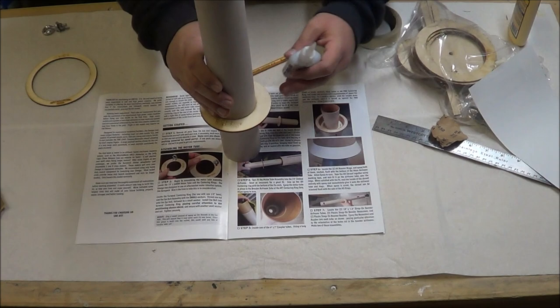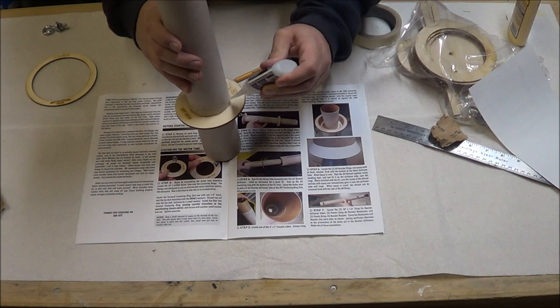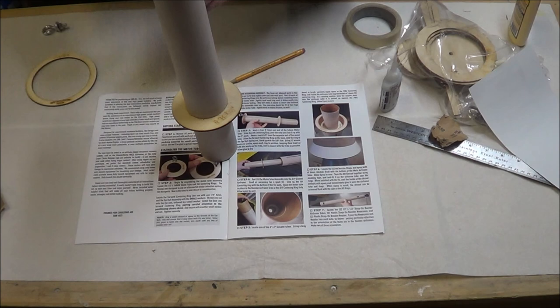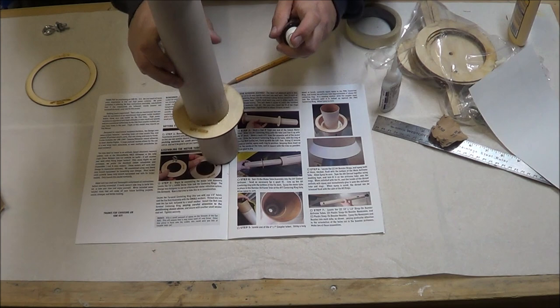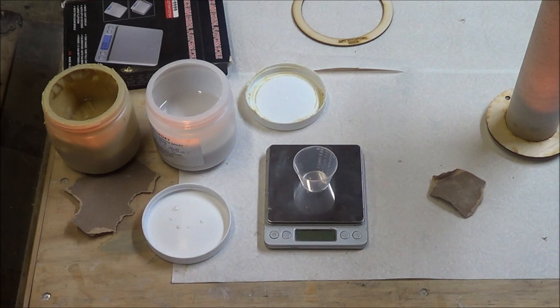To tack the centering rings in position here, I just use a few drops of super glue. We'll just go around the perimeter like this. And this will not provide enough strength for flight, but it's enough to hold the rings in position so we can remove the tape and add the epoxy fillets. A little bit of kicker to quicken up the drying of the CA. And now I can remove the tape.